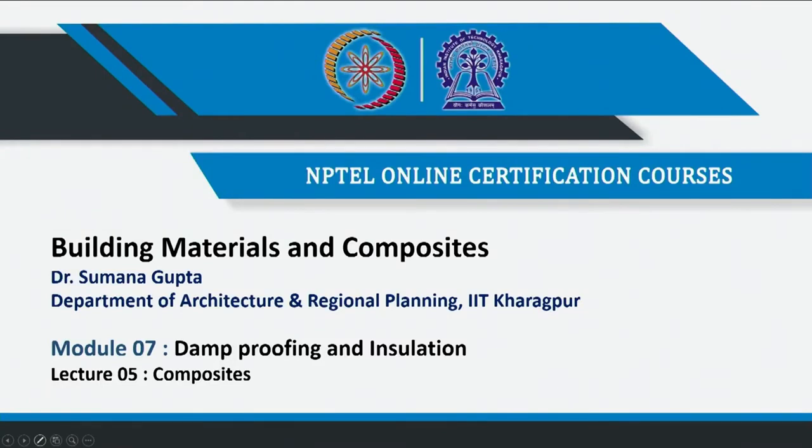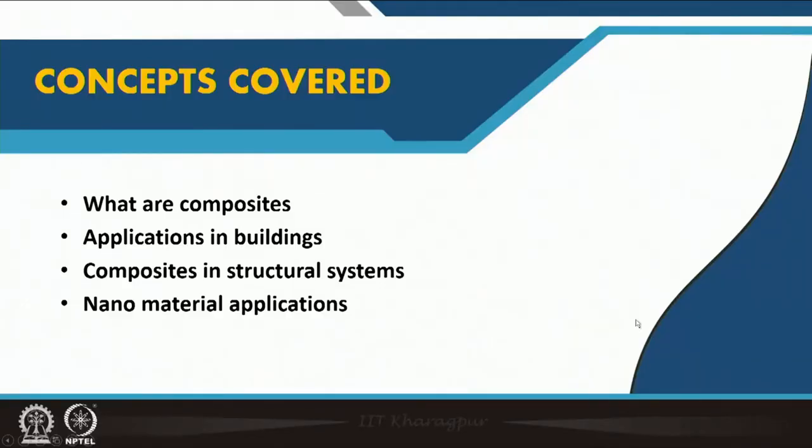Here I have included composites. Composites is a combination of two or more materials. As you had seen, the thermal insulators were not single items but were applied within a system — within a framing and then covered with something. That is why I thought of putting composites in this particular section, and we will discuss composites.